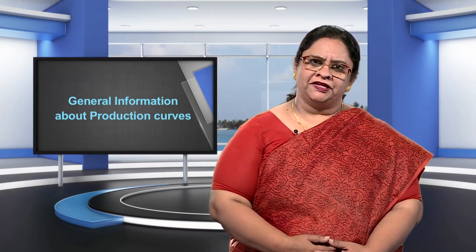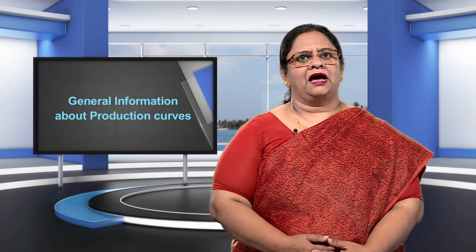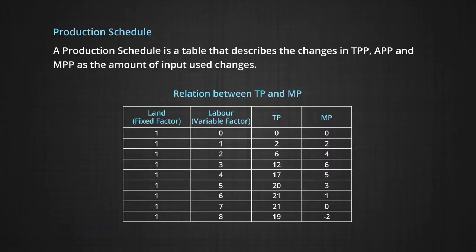It is the marginal physical product that acts as a driver for the average physical product, since the rate of change in marginal physical product will directly affect the average physical product. If the marginal physical product is more than the average physical product, it will pull up the APP. If it is less than the average physical product, then the APP falls. When the average physical product is maximum, the average physical product and the marginal physical product are equal. The same information can be represented in a production schedule — a table that describes the changes in total physical product, average physical product, and marginal physical product as the amount of input used changes. The diagrammatic representation of these variables gives us the TPP curve, the APP curve, and the MPP curve, which are shown in the diagram on the screen.